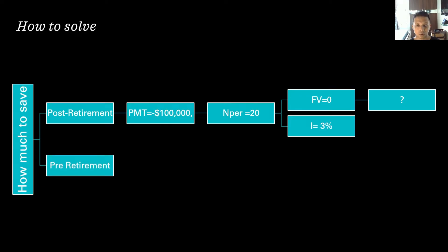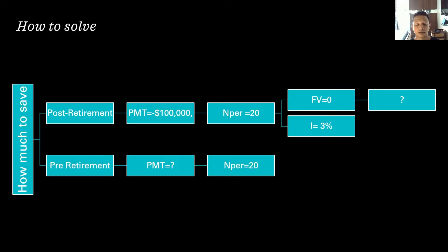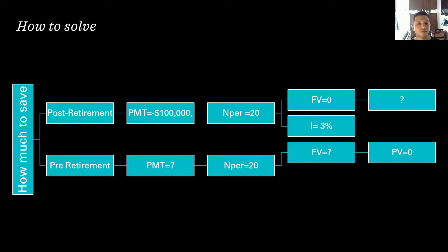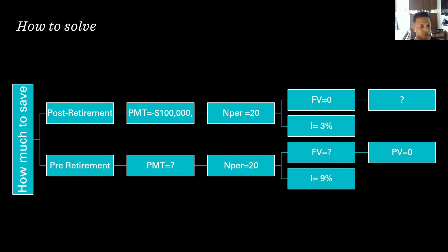Looking at pre-retirement: PMT is what we're trying to calculate — how much to save per month. N is also 20 years. The future value is unknown at this stage. PV is zero because we're starting with no investments. I/Y is 9% since pre-retirement we can take higher risk. Pre-retirement has too many unknowns, so we must solve post-retirement first.